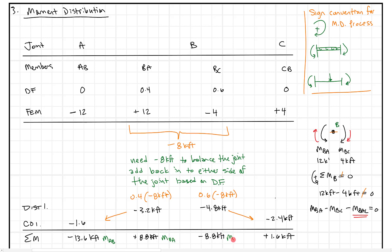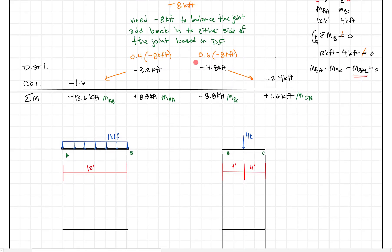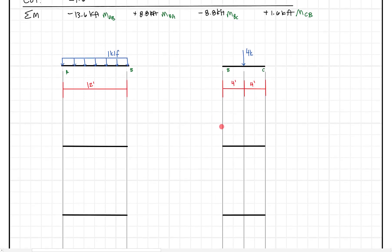Similarly, marching right down through, this is BC and this is CB. We know what these moments are at each of those points, so we can plot those on our moment diagram right now. But there are going to be some in-between points we still need to figure out. I've already made some free body diagrams, and I want to talk sign conventions for a second, because this sign convention gets confusing.